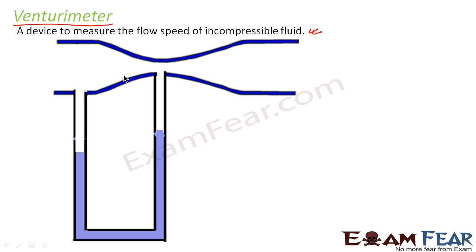Basically, the Venturimeter consists of a broad tube with a constriction at the middle. It includes a U-tube manometer: one end of the manometer is connected to the constriction and the other end is connected to the broader side of the Venturimeter. One arm is at the constriction and the other one is at the broader neck point.